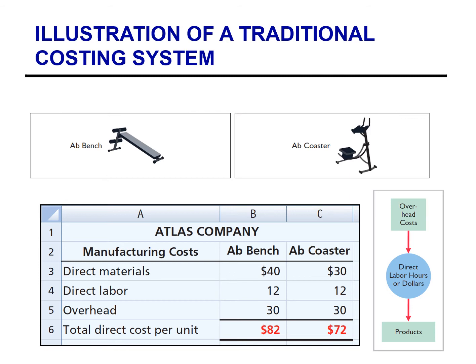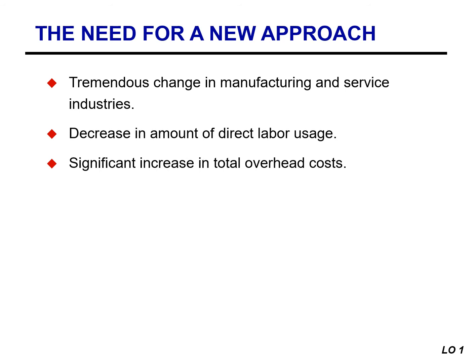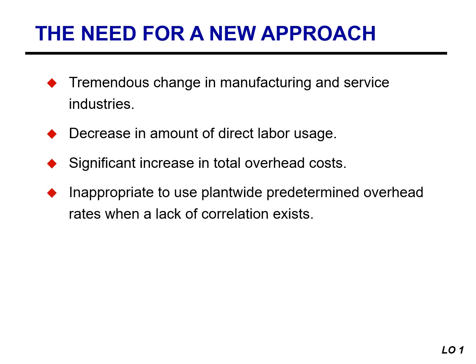Historically, the use of direct labor as the activity base made sense as direct labor made up a large portion of total manufacturing cost, and there was a high correlation between direct labor and the incurrence of overhead costs. In recent years, however, manufacturers and service providers have experienced tremendous changes. Advances in computerized systems, technological innovations, global competition, and automation have drastically altered the manufacturing environment. As a result, direct labor has greatly decreased, while total overhead costs from depreciation on expensive equipment, utilities, repairs, and maintenance have significantly increased. When there is minimal or no correlation between direct labor and overhead costs incurred, plant-wide predetermined overhead rates based on direct labor are misleading.